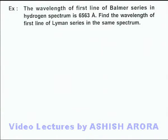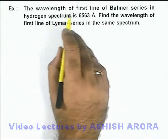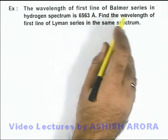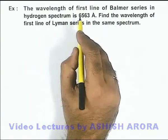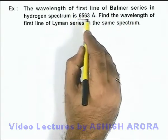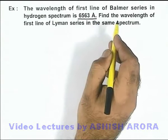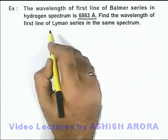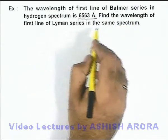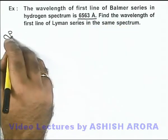In this example, we are given that the wavelength of the first line of the Balmer series in the hydrogen spectrum is 6563 angstrom, and we are required to find the wavelength of the first line of the Lyman series in the same spectrum.